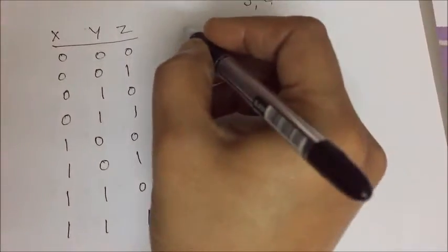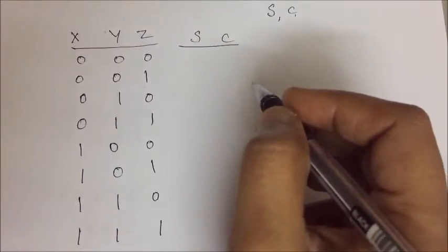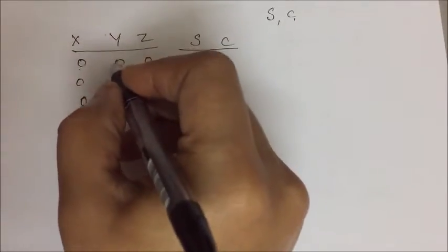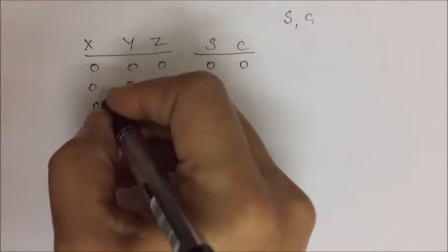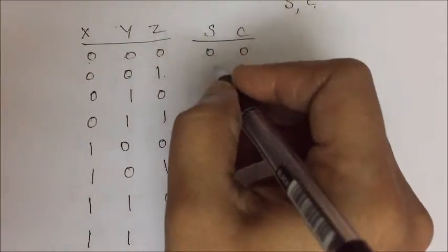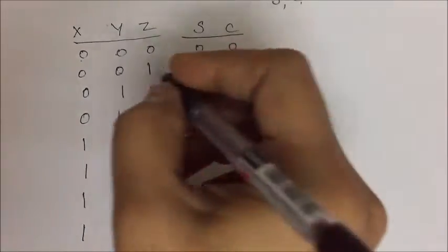Now 8 combinations. Now we are supposed to write sum and carry when we add these 3 bits. That is 0 plus 0 plus 0, sum is 0, carry is 0. 0 plus 0 plus 1 equals 1. So we will have sum as 1 and carry as 0.